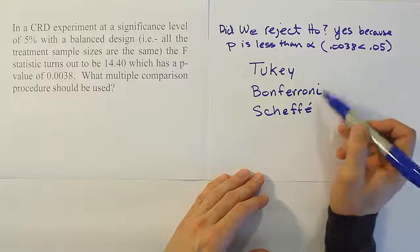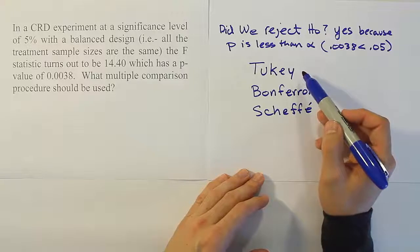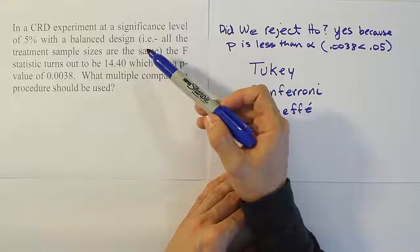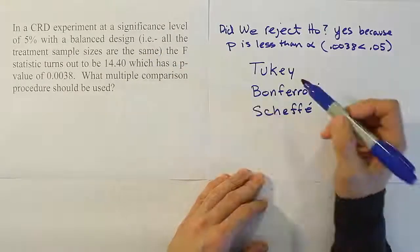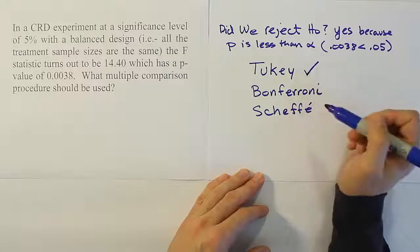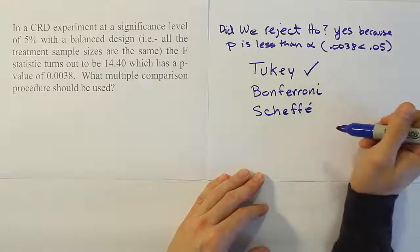So why would we choose these? Well, of course, Tukey we'd choose if we could. But the only way we can choose Tukey is if we have a balanced design. In other words, all the sample sizes are the same. That's what we have here. So we're going to go ahead and say that Tukey is our choice for this problem. And that's it. We're done with this problem.